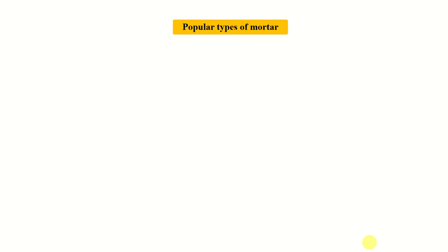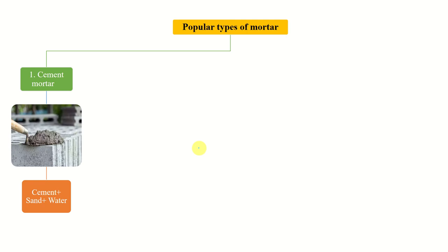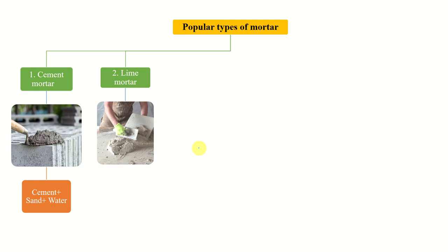Let me tell you the popular types of mortars generally used, apart from the classification. The first one is cement mortar — the paste mainly consists of cement, sand, and water. The second one is lime mortar — lime is mainly used here, and lime, sand, and water are the main ingredients.